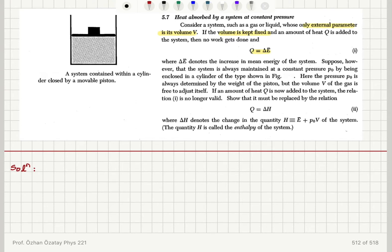Suppose however that the system is always maintained at a constant pressure P0 by being enclosed in a cylinder of the type shown in the figure. Here the pressure P0 is always determined by the weight of the piston, but the volume of the gas is free to adjust itself. If an amount of heat is now added to the system, the relation given earlier is no longer valid.